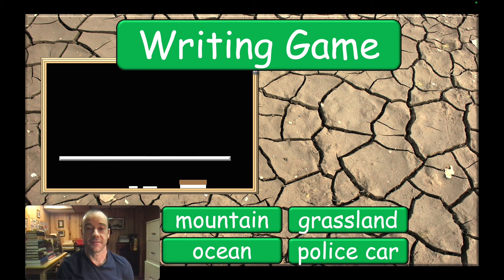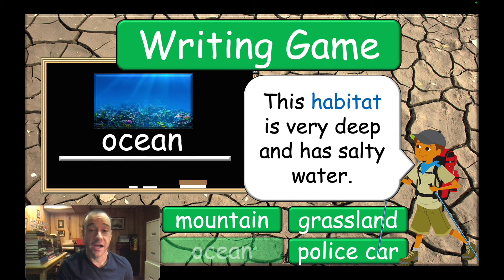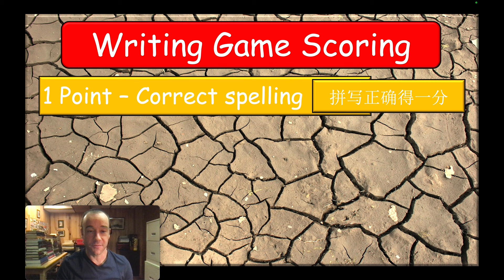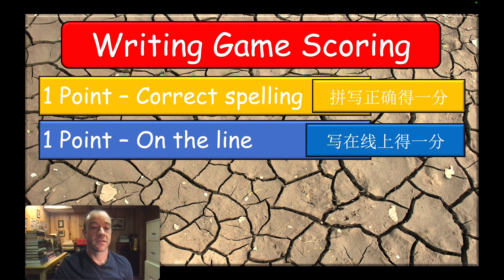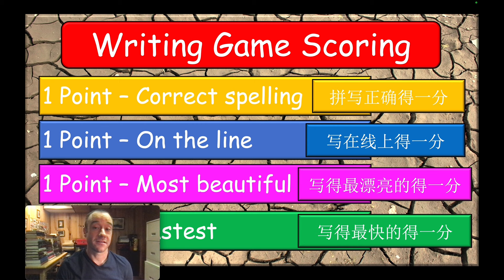The next game is a writing game. You can bring up one student from each team and give them a spot on the board to write, or if you have little whiteboards they can hold and present it. There are lots of ways to play this game. I use a different scoring system: if they have the correct spelling, they get one point; if they write on the line, they get one point; if it looks really nice, they get one point; and if they're the fastest, they get one point.